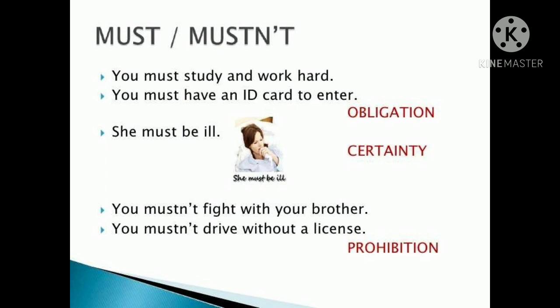For example: 'You must not eat so much junk food or you will get fat.' Must and mustn't are also used to show obligation, certainty and prohibition. For obligation: 'You must study and work hard.' 'You must have an ID to enter.' For certainty: 'She must be ill — I am sure of that.' For prohibition: 'You mustn't fight with your brother.' — I am stopping you from doing something. 'You must not drive without a license.' — again, an example of prohibition.